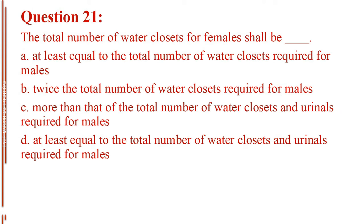Question number 21. The total number of water closets for females shall be blank. Letter A, at least equal to the total number of water closets required for males. Letter B, twice the total number of water closets required for males. Letter C, more than that of the total number of water closets and urinals required for males. Letter D, at least equal to the total number of water closets and urinals required for males.